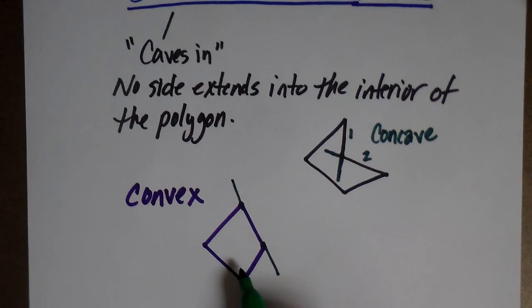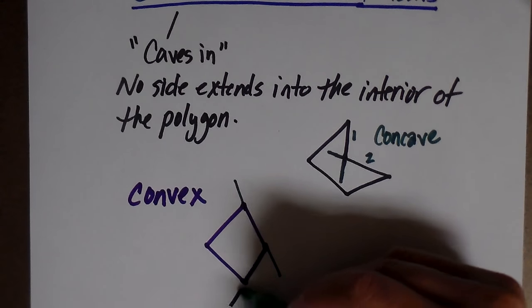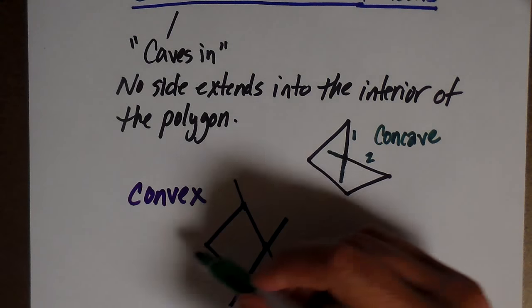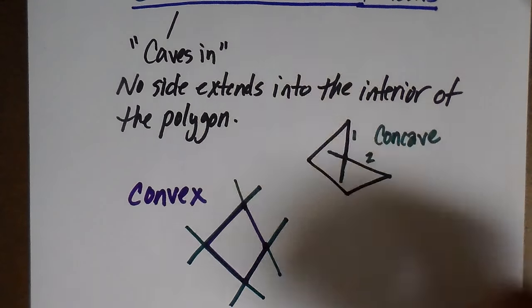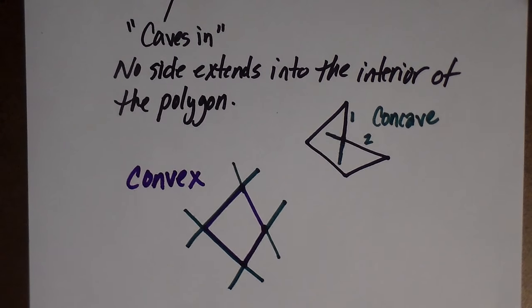That's going to be convex because if I were to extend all of the sides, that one doesn't go into the interior, right? Neither does this one. Nor does this one. And nor does this one. So that is a convex polygon because none of the sides extend into the interior.